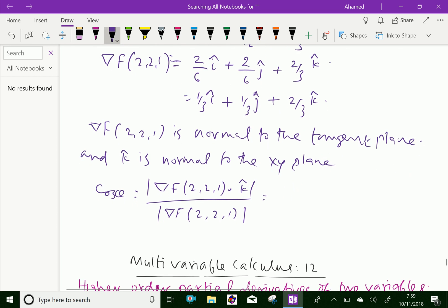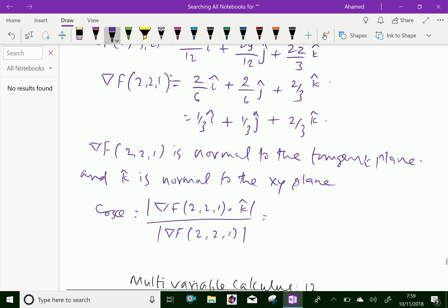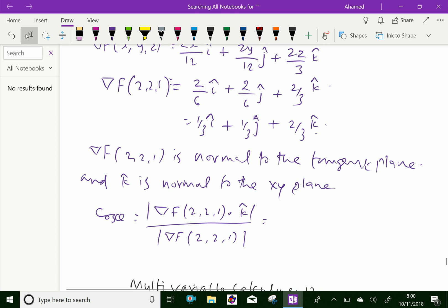Here vector k dot gradient of F at (2, 2, 1) is 2/3 only because here k vector, other vectors are 0. So 2/3 over square root of 1/9 + 1/9 + 4/9. By simplifying we get 2/√3.